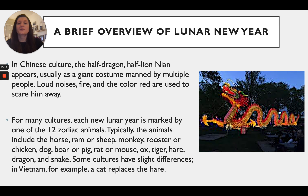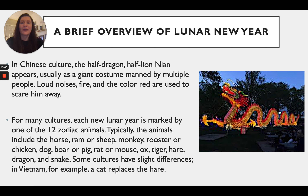In Chinese culture, the half-dragon, half-lion Nian appears usually as a giant costume manned by multiple people. Loud noises, fire, and the color red are used to scare it away. The costume is actually hollow with wooden dowels inside, and the people underneath hold onto those and walk it in the parade. These costumes are pretty massive in size, so it takes a lot of people underneath to hold it up and move it along.